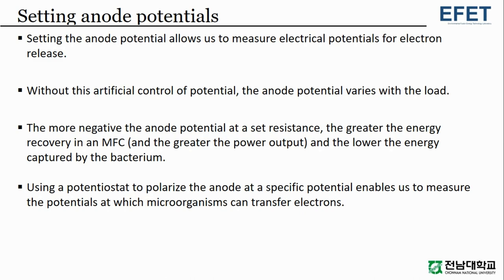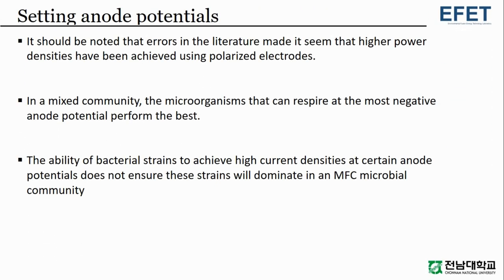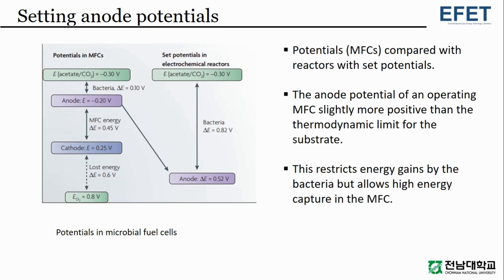Using a potentiostat to polarize the anode at a specific potential enables us to measure the potentials at which microorganisms can transfer electrons. It should be noted that errors in the literature made it seem that higher power densities have been achieved using polarized electrodes. In a mixed community, the microorganisms that can respire at the most negative anode potential perform the best. The ability of bacterial strains to achieve high current densities at certain anode potentials does not ensure these strains will dominate in an MFC microbial community.